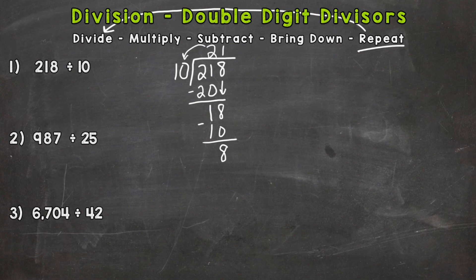Now we went all the way over to the ones place, so we do not have anything else to bring down. We are done with this problem. So that 8 is left over; that is our remainder. So our quotient or answer to that division problem is 21 remainder 8.